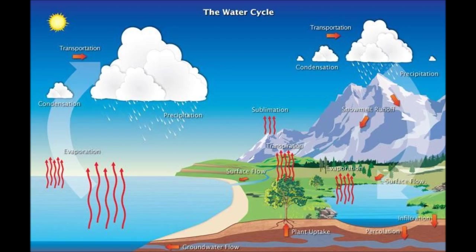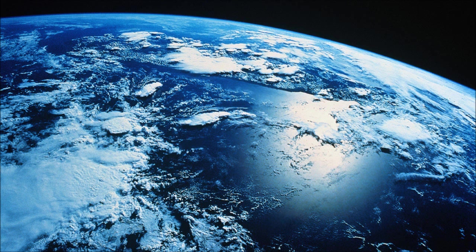The water cycle is important because it moves around oxygen from water to air to land and back again. This is done through evaporation, transpiration, and precipitation. O16 and O18 are transported around the Earth through the water cycle, carried by water vapor.